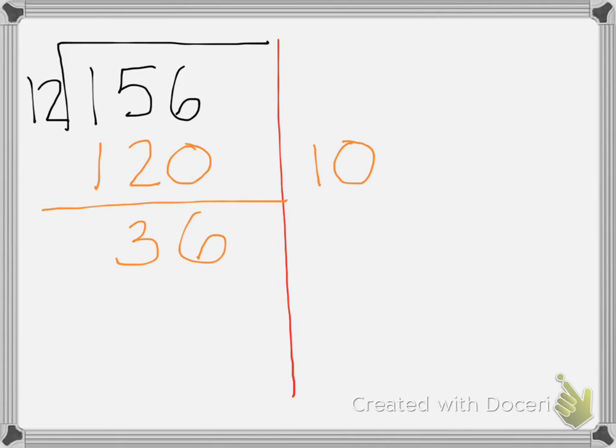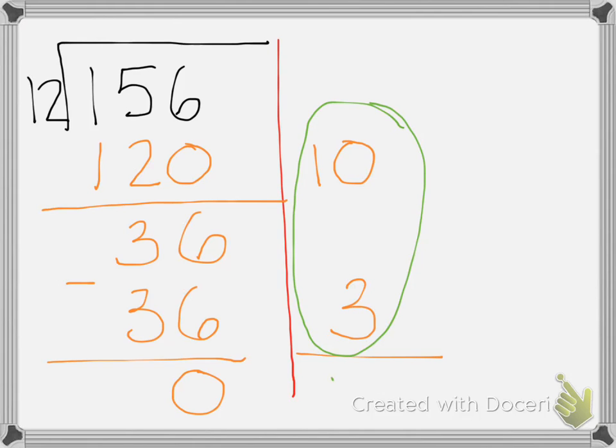So, I'm going to write 36 under the 36, and a 3 off to the side. The subtraction equals 0. And then, I need to add these two digits together. So, 10 plus 3 is 13. So, 156 divided by 12 is 13.